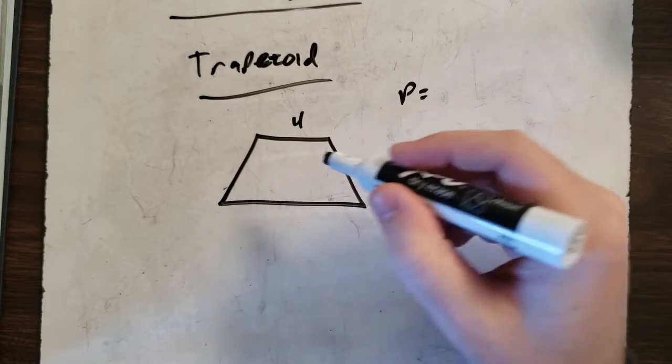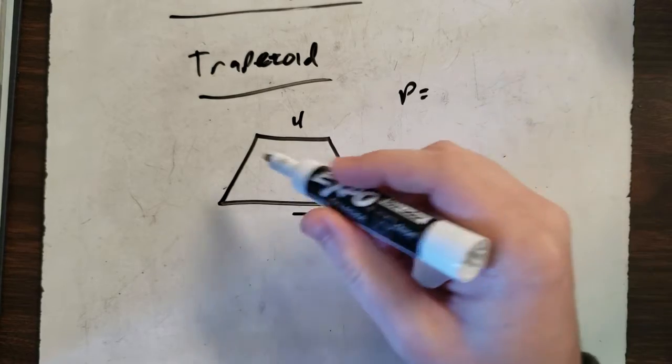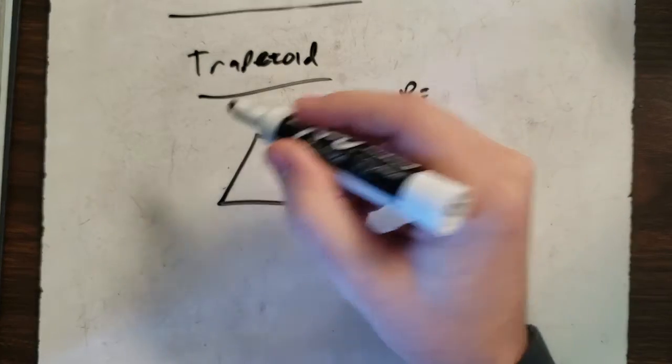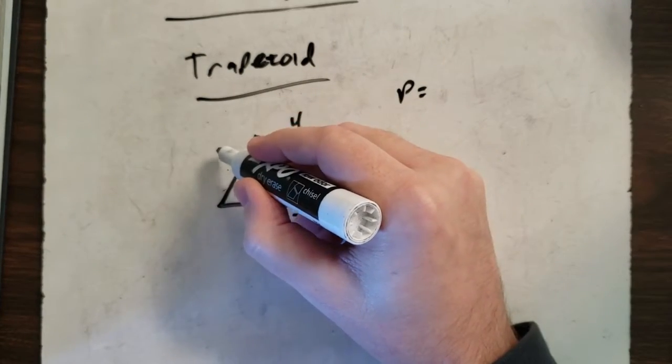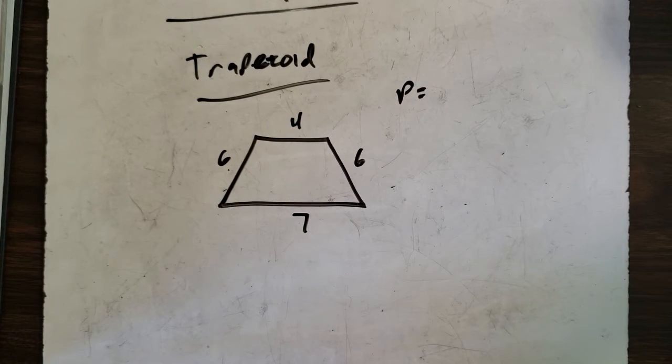this side is 4, this side let's say is 7, and then these two sides are the same. So let's say this is going to be 6 and 6.